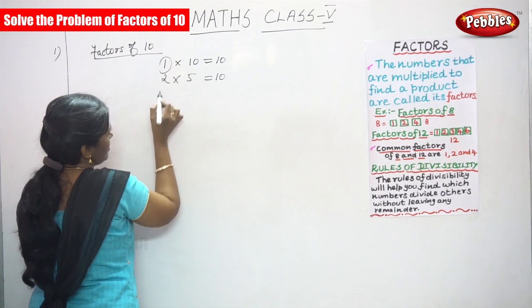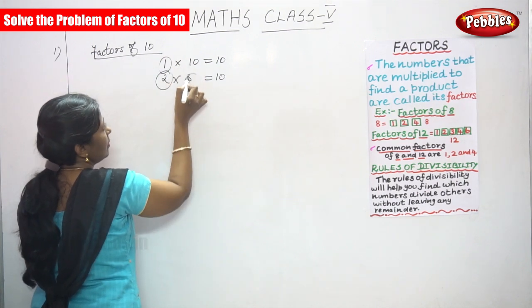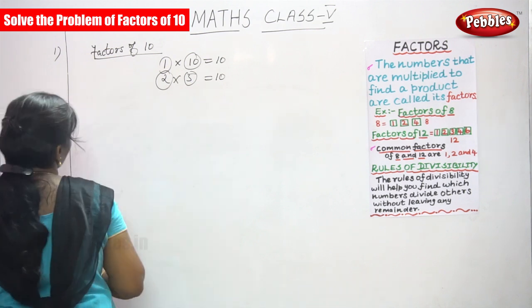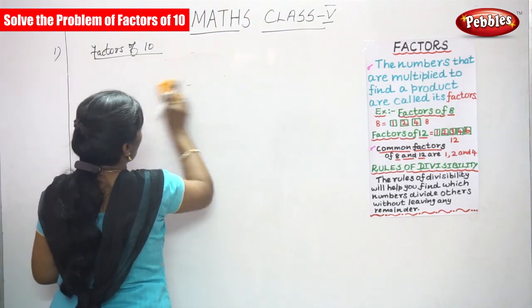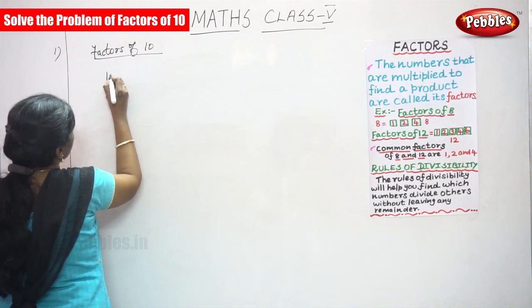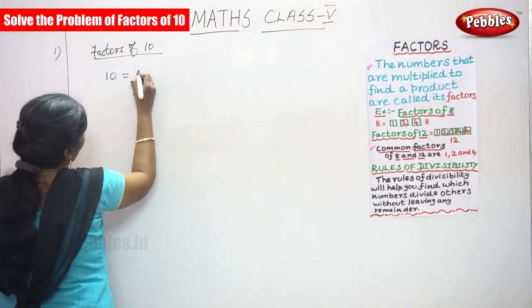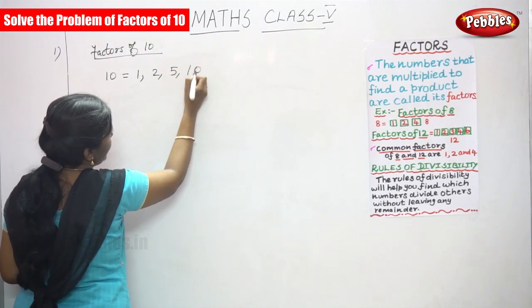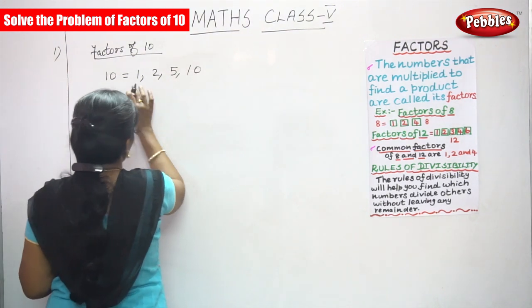So 1 is a factor, 2 is a factor, 5 is a factor and 10 is a factor. So factors of 10 is equal to 1, 2, 5, 10. This is the answer, factors of 10.